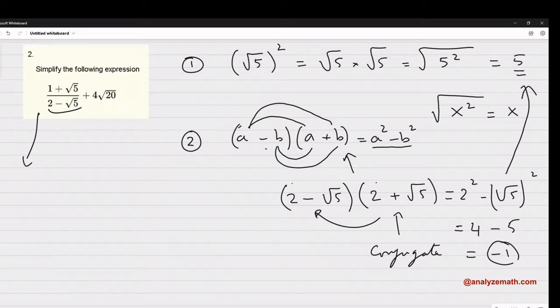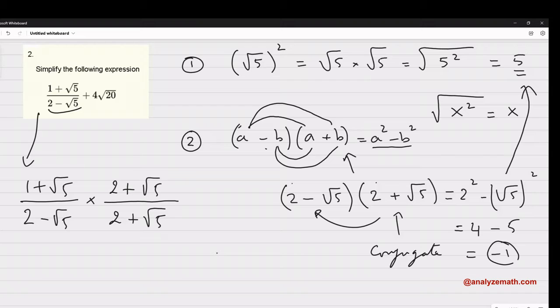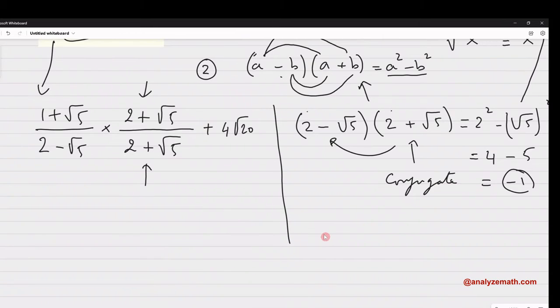So, to apply it, what we need to do is, we go 1 plus square root of 5. The denominator is 2 minus square root of 5. So, we need to multiply the conjugate. But, in order not to change the value of the expression, we need to multiply top and bottom by the same quantity, which is this, which is this. And then, for square root of 20. Now, let's put a line here.